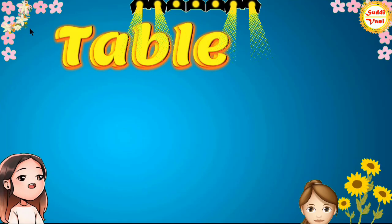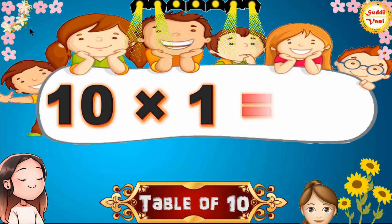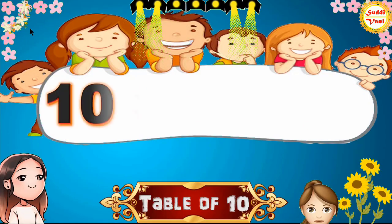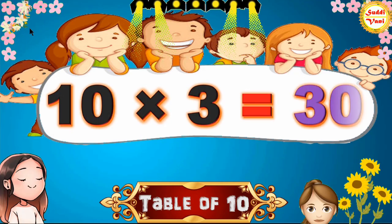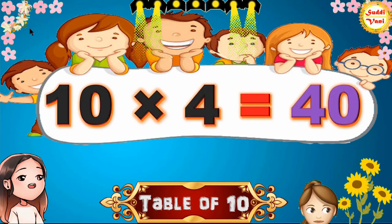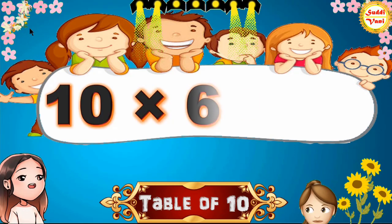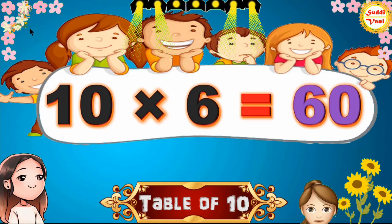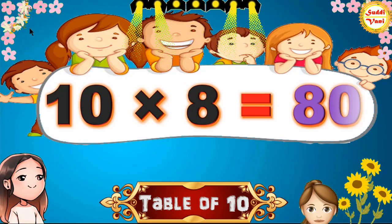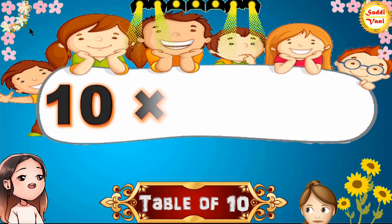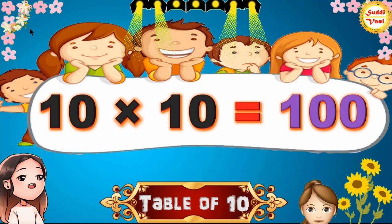Hello children, we will learn table of 10. 10 × 1 = 10, 10 × 2 = 20, 10 × 3 = 30, 10 × 4 = 40, 10 × 5 = 50, 10 × 6 = 60, 10 × 7 = 70, 10 × 8 = 80, 10 × 9 = 90, 10 × 10 = 100.